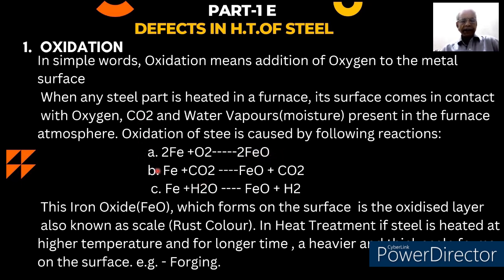In the second case, when CO2 is present and iron comes in contact with it, it again forms FeO. Similarly, when iron comes in contact with H2O — water vapor — it again forms FeO. So in all three reactions, whether it is O2, CO2, or H2O, iron oxide formation occurs. This iron oxide layer that forms on the surface is called scale, having a rust color.